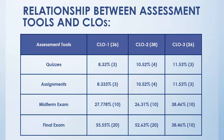For quizzes: Quiz 1 is 3 marks from CLO1, Quiz 2 is 4 marks from CLO2, and Quiz 3 is 3 marks from CLO3. This gives 10 marks total for quizzes, 10 marks for assignments, 30 marks for the midterm exam, and 50 marks for the final exam.